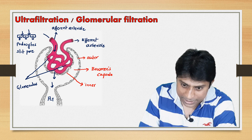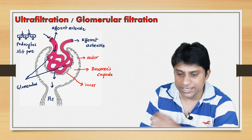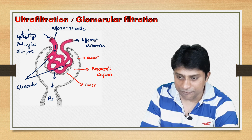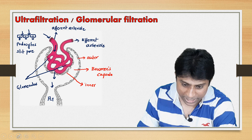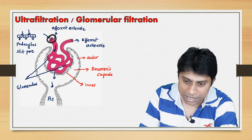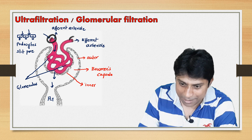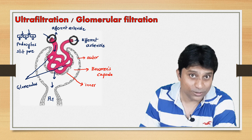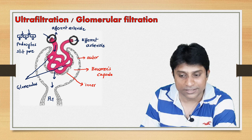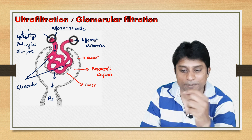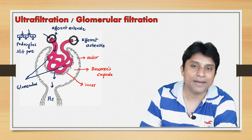Blood enters through the afferent arteriole, divides into the network of capillaries called the glomerulus, and leaves as the efferent arteriole. Observe the afferent and efferent arterioles. The diameter of the afferent arteriole is greater and the diameter of the efferent arteriole is lesser. This is the key factor for building pressure inside the glomerulus.